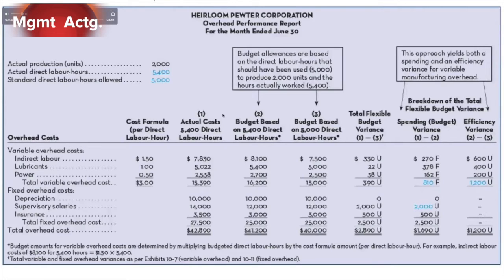Column one minus column three gives us our total flexible budget variance — an unfavorable variance of $390. We can break that down into a spending variance, which is actual-actual minus actual-standard, and an efficiency variance, which is actual-standard minus standard-standard. The spending variance measures the actual dollars we part with.